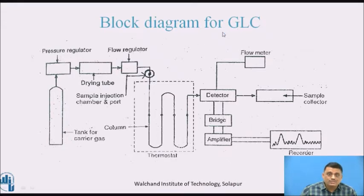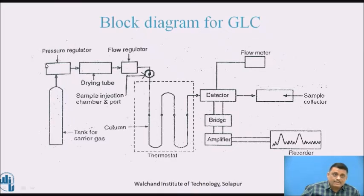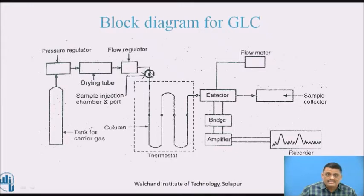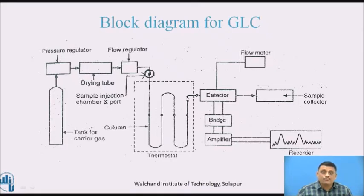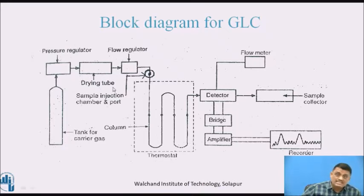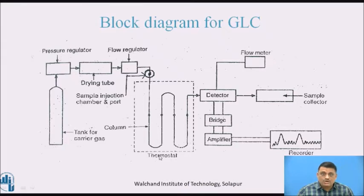This is the flow diagram — the block diagram — of the GLC. The tank for carrier gas is the mobile phase, the source of the mobile phase gas. There is a pressure regulator, followed by a drying tube because the gas may contain moisture, which is removed as the gas passes through the drying tube. There is a flow regulator and a sample injection port where the sample under investigation is introduced. From there, the column begins — it is in the form of tubing, made of steel or glass, 0.1 mm to 1 mm in dimension. Sometimes the column is arranged in a coiled structure, and the columns are kept inside a thermostat, indicated by the dotted line, which is heated.